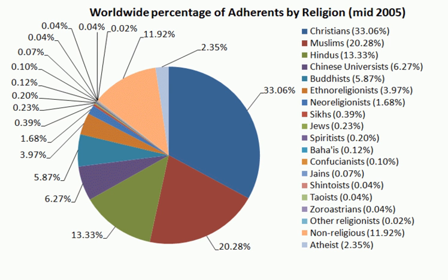In the 12th and 13th centuries, Turks and Afghans invaded parts of northern India and established the Delhi Sultanate in the former Rajput holdings. The subsequent slave dynasty of Delhi managed to conquer large areas of northern India, approximately equal in extent to the ancient Gupta Empire, while the Kalji dynasty conquered most of central India. The Sultanate ushered in a period of Indian cultural renaissance. The resulting Indo-Muslim fusion of cultures left lasting syncretic monuments in architecture, music, literature, religion, and clothing.